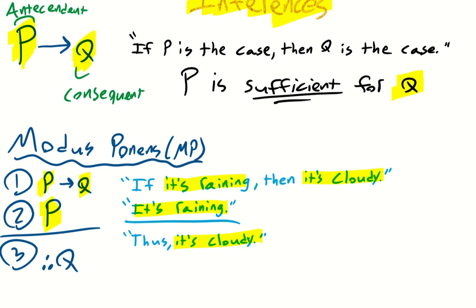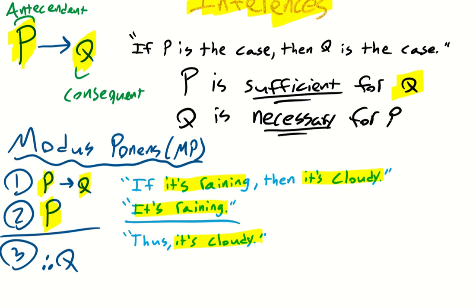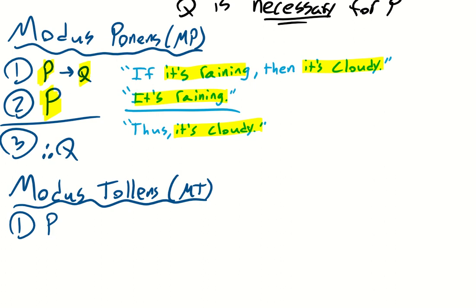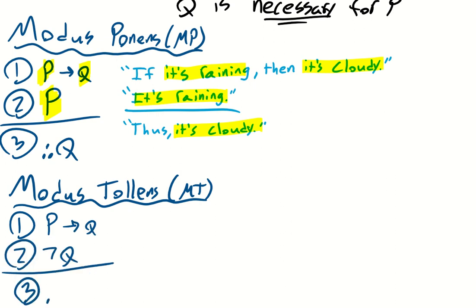Though p is sufficient for q, it's not necessary for q. However, q, the consequent, is absolutely necessary for the antecedent p. Now let's look at modus tollens, or MT for short. We have the first premise: if p, then q. The second premise denies the consequent — q is not the case. Since the consequent is necessary for the antecedent, and we know that q is not the case, we can deny the antecedent: p must not be the case, so not-p.